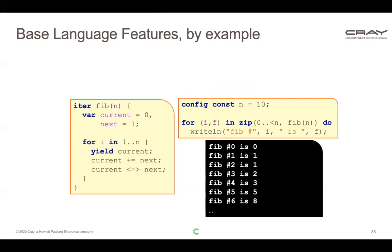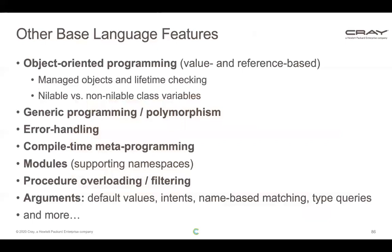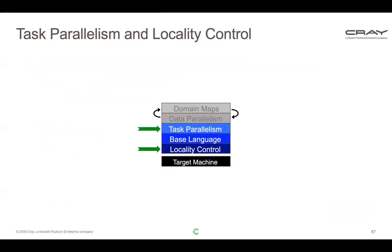That's a brief introduction to some of the base language features. The base language itself is huge — it's got everything you might want from a modern language: object-oriented features, generic programming, error handling, compile-time metaprogramming, modules as namespaces, procedure overloading, name-based argument matching, default values, intents, and lots more. We could spend a whole day talking about just the base language.